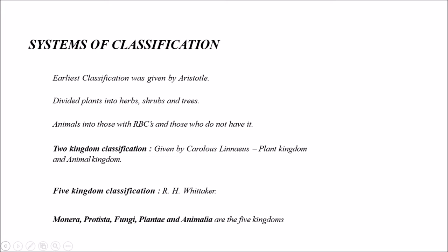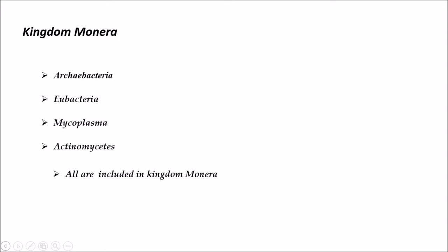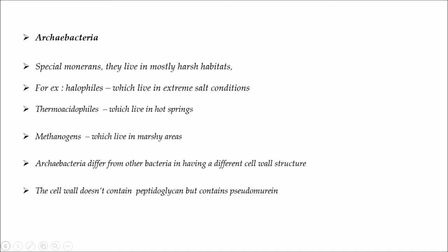Coming to Kingdom Monera, the organisms included are archaebacteria, eubacteria, mycoplasma, and actinomycetes. Archaebacteria are called special monerans as they live in mostly harsh habitats, which they easily adapt to.